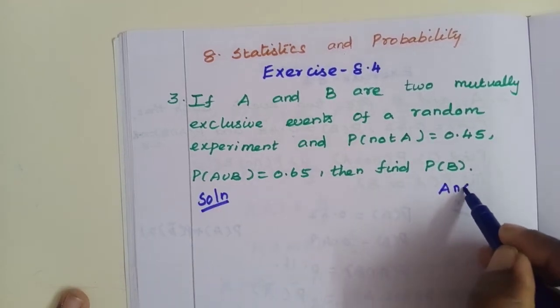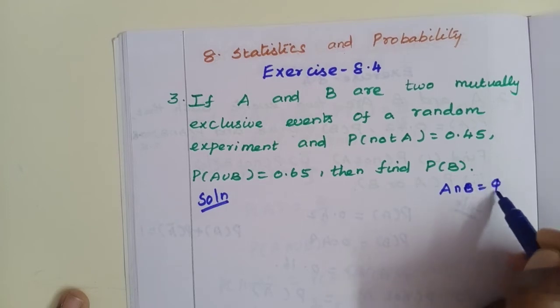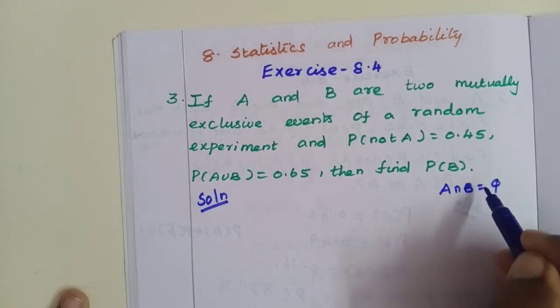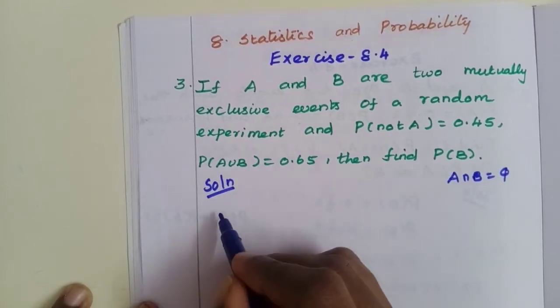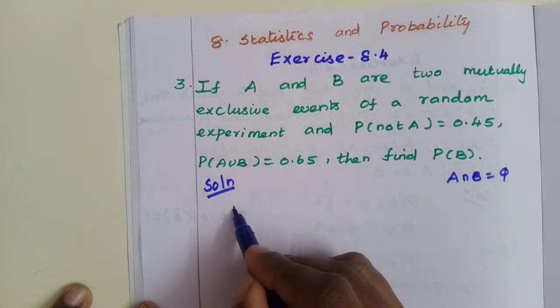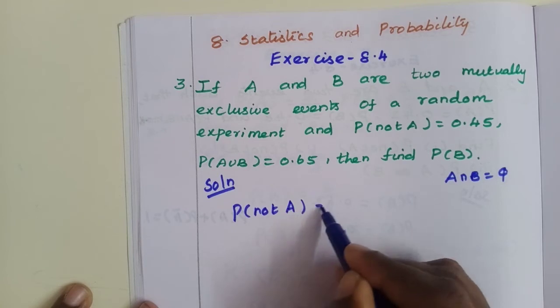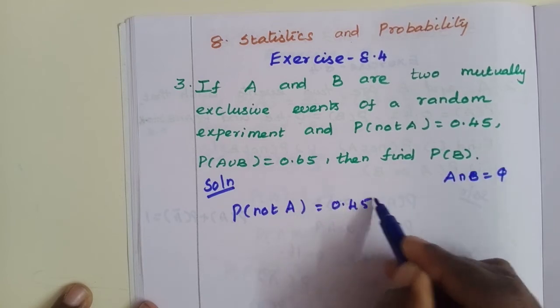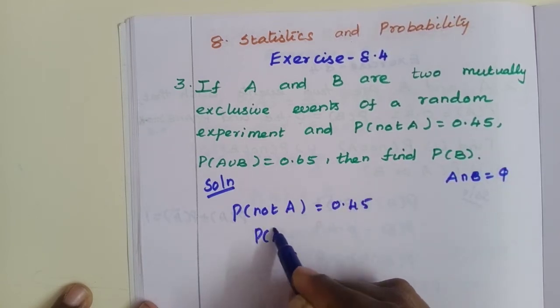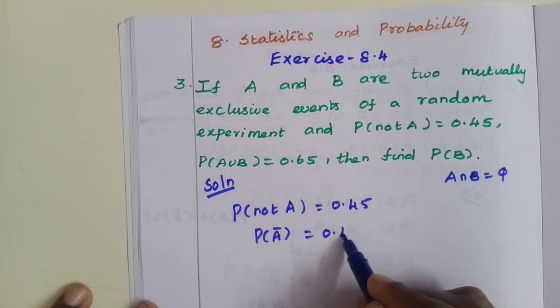So mutually exclusive events, A intersection B is the empty set. P(not A) is given. Now first, let's find P(A). P(not A) equals 0.45, so P(A bar) equals 0.45.